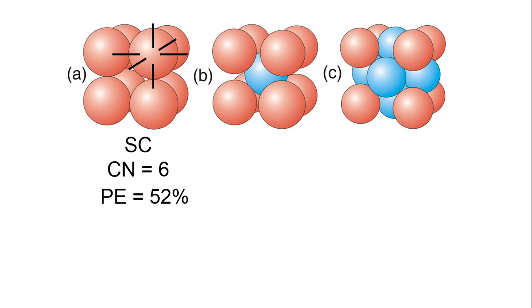In the body-centered cell, the body atom touches all eight of the corner atoms, so the body-centered cell has a coordination number of 8. Note that any given corner atom is part of eight unit cells, so each corner atom touches eight body atoms. The cell is more efficiently packed with a packing efficiency of 68%.